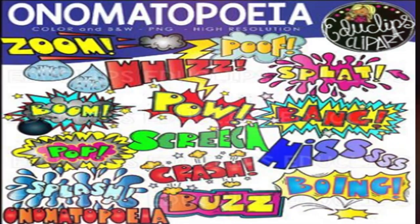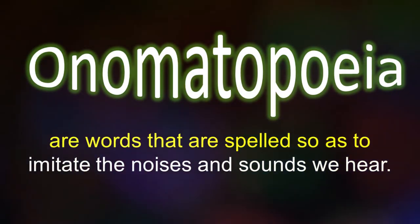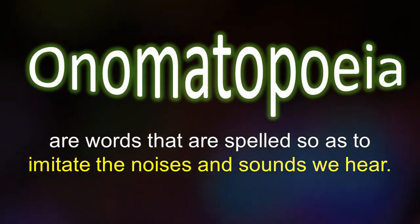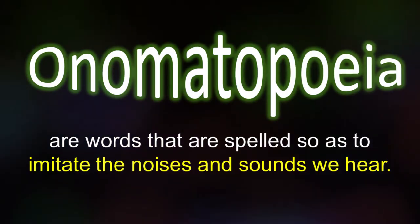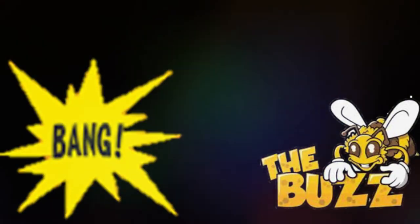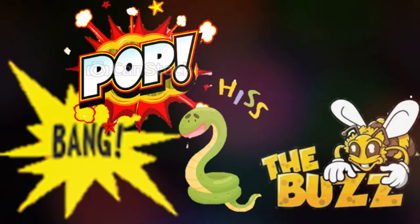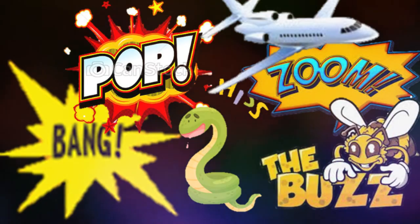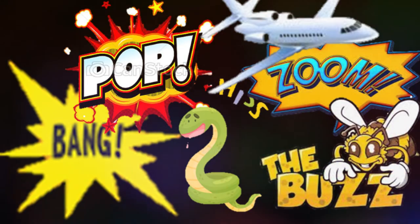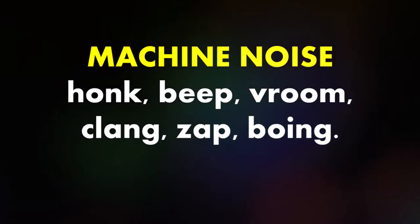Next is the sound device called onomatopoeia. Onomatopoeia is a word that is spelled so as to imitate the noise and sound we hear. Say the following onomatopoeia: the buzz of a bee, the bang of a gun, the hiss of a snake, the pop of a firecracker, the zoom of an airplane. What word spells the sound of a bee, a gun, a snake, a firecracker, and an airplane?